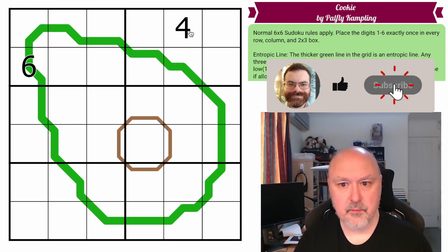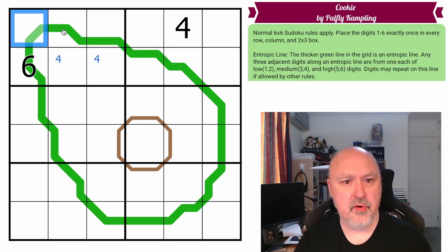So, we can see that 4 can't be in any of those, so 4 has to be down here, but we also know that because this is a high digit, we know that these two digits, in order to make these three digits have a low, a medium, and a high, have to be low and medium.